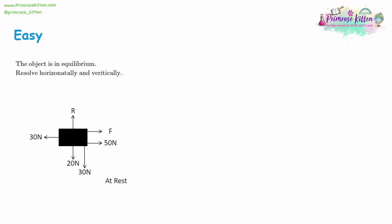We're going to have a look at forces. The first thing we need to do is to correctly identify what's happening with the forces. What we want to do is resolve horizontally and vertically. We'll look at the horizontal forces: we've got 30 newtons to the left, 50 newtons to the right, and an unnamed force F also to the right. Vertically we've got a 20 newton force downwards and another force downwards which is 30 newtons.